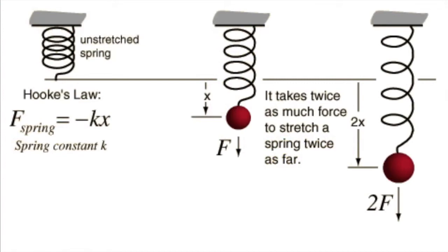Here's an image showing Hooke's Law again. We can see an unstretched spring, and as the spring stretches down some distance x, if we want to go twice as far we need twice as much force. This confirms that force and stretch distance are directly proportional to each other.